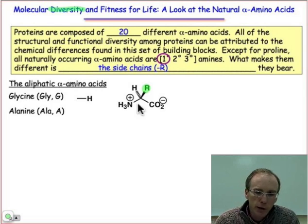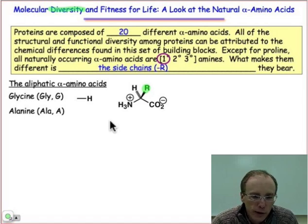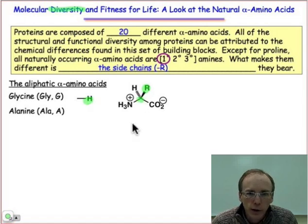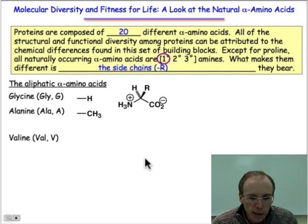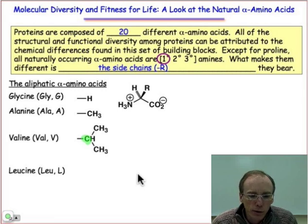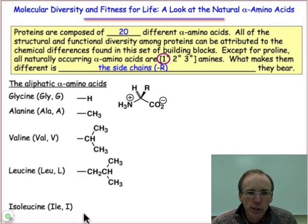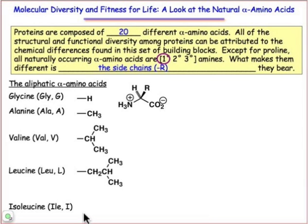Let's start with the aliphatic amino acids. The R group in an aliphatic amino acid will be an sp3 hybridized carbon, or in the case of glycine, just a hydrogen atom, giving a CH2 at the α-carbon. Alanine has a methyl group. Valine has an isopropyl group, with attachment to the secondary carbon of the isopropyl group. Leucine has an isobutyl group, and isoleucine has the sec-butyl group.